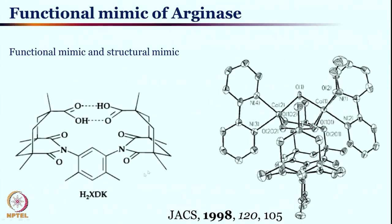This is a gigantic ligand that has been designed. These are the two carboxylic acid parts which are potentially going to hold the two metal centers together. Here is cobalt, here is cobalt, and it is bridged by these two carboxylate units.